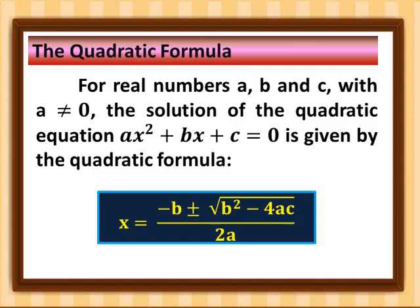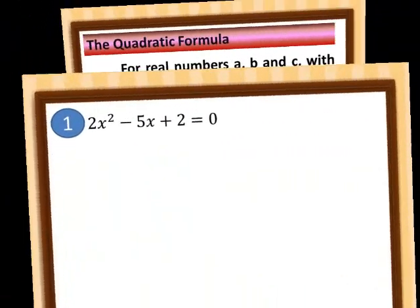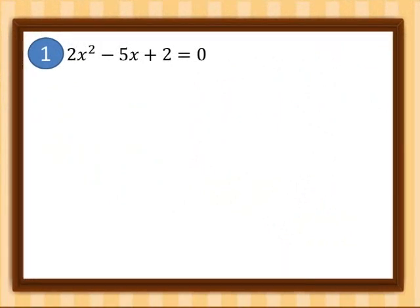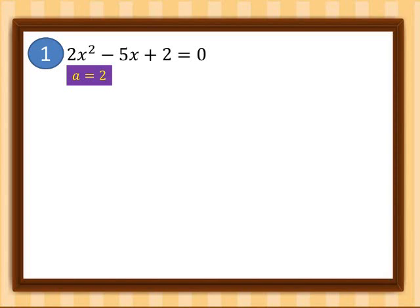Let's have the first example. Solve the following using the quadratic formula. Example number one: 2x² − 5x + 2 = 0. First we need to identify the values of a, b, and c. Here a = 2, b = −5, and c = 2.